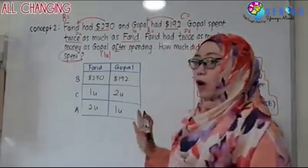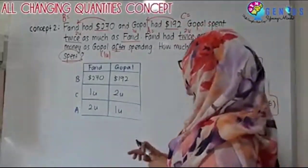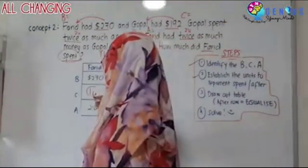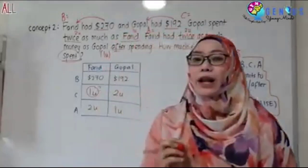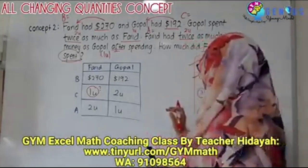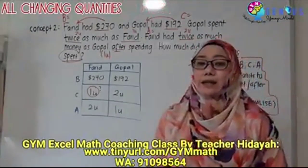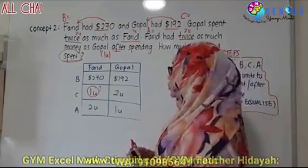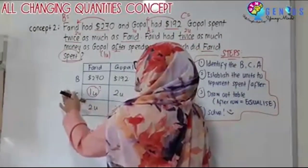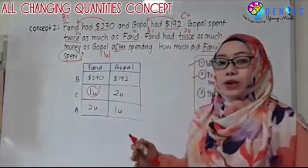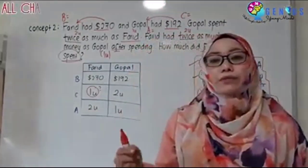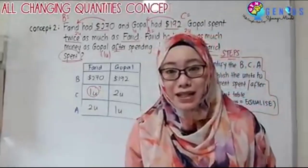Once we have this, for All-Changing Quantity we have to circle what we want to find out first. We want to find how much Farid spent, so we want to know one unit. Next step: you have to establish a row to equalize. The units are in the change and the after. I can't equalize the change because that's what I want to find, so I equalize the after row. Farid has two units and Gopal has one unit — are they the same? They are not.